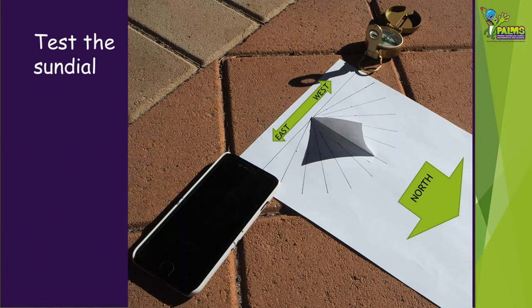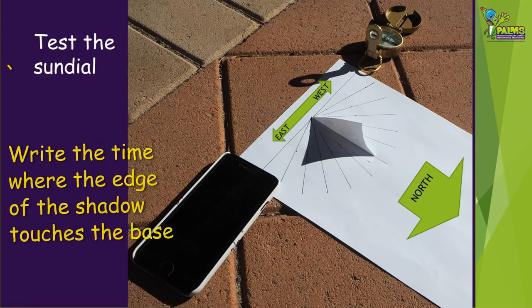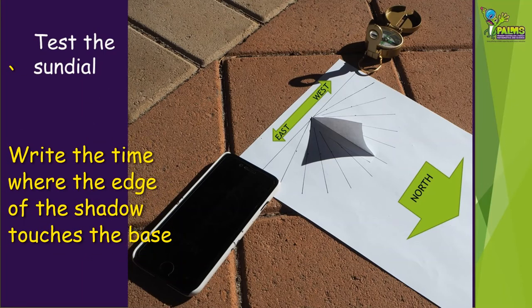Take your gnomon sundial out into the sun with your compass or phone with the compass app. Line up the baseline in the east-west direction. The angled lines of the base should be on the north side. Notice where the edge of the shadow hits the base and write the time there.